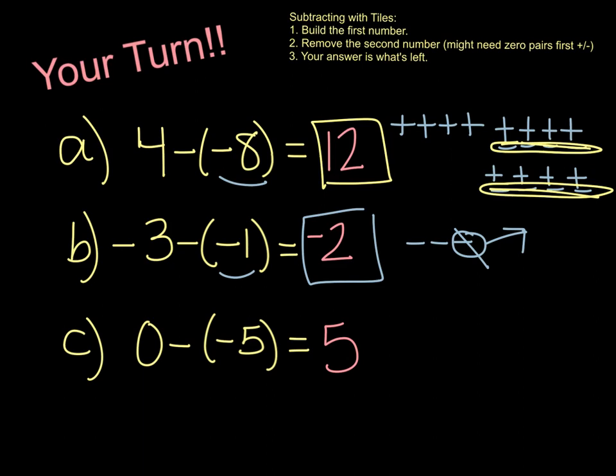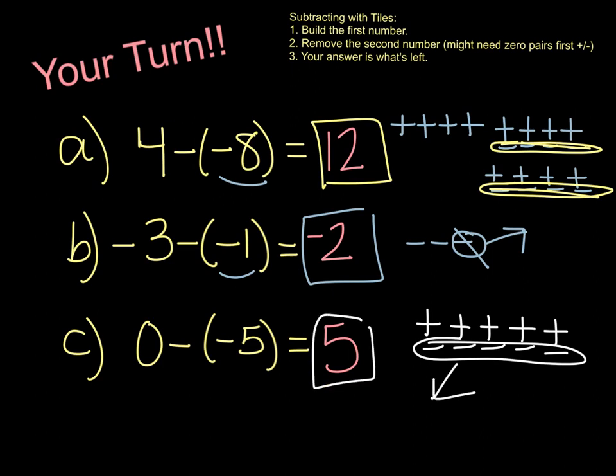For the final one, I'm starting with 0, and I need to take away negative 5. So I'm going to start by building five 0 pairs. And I'm going to remove 5 negatives and count up what's left. And I see that I have 5 there.